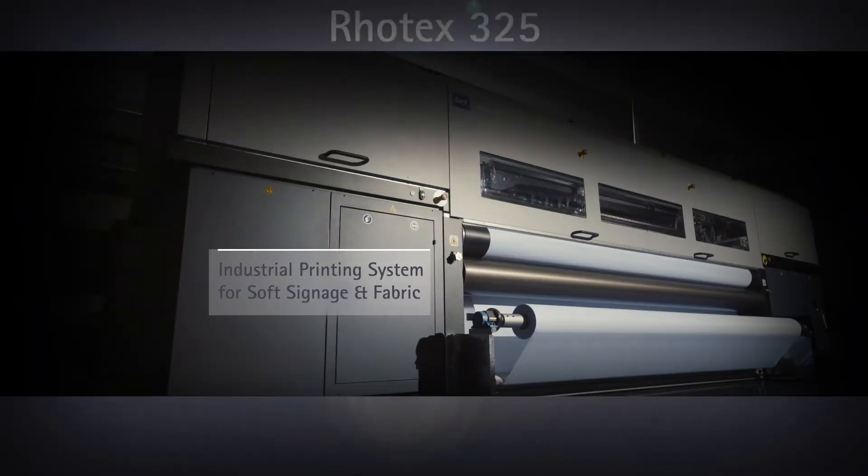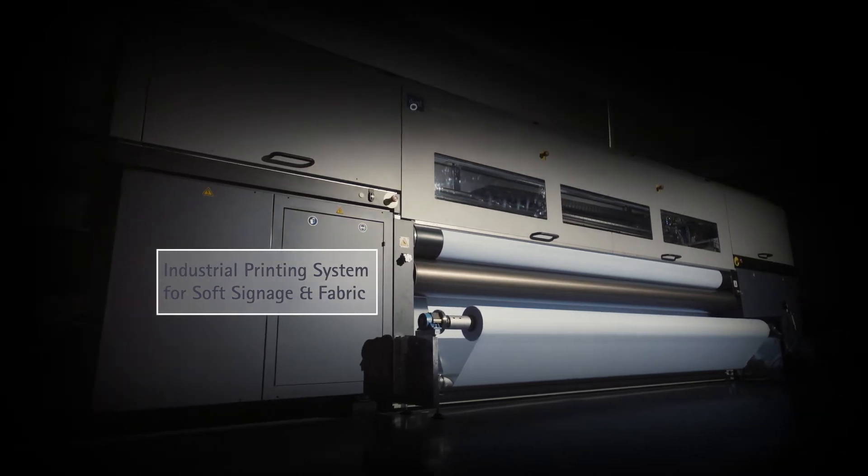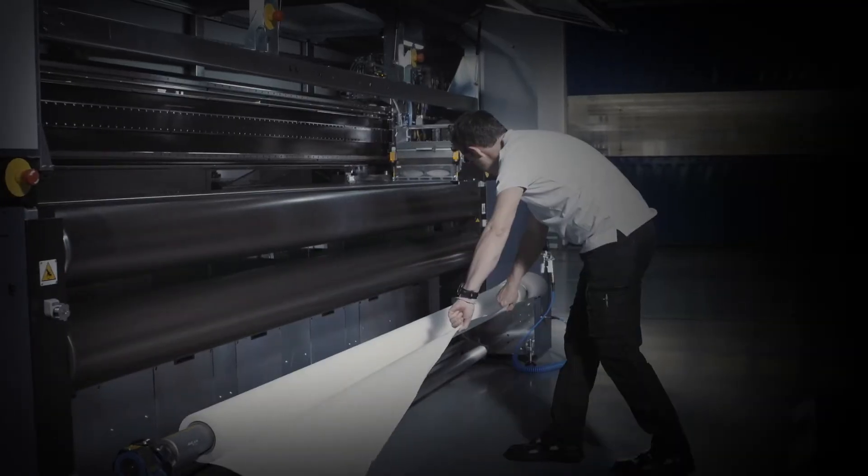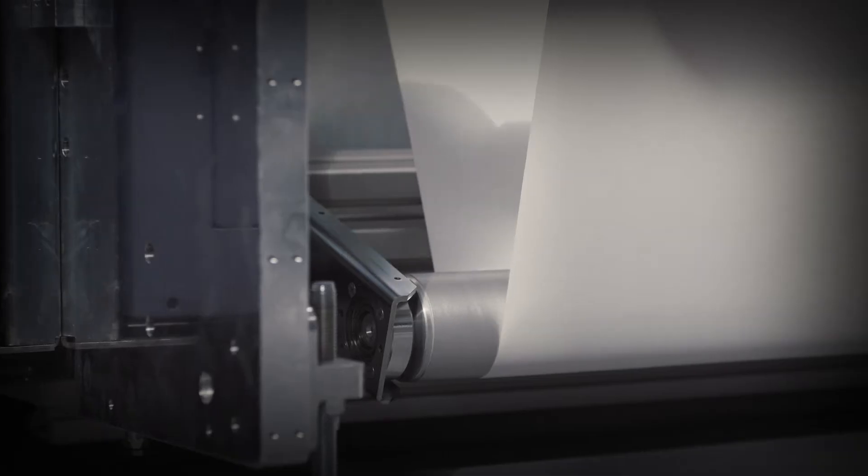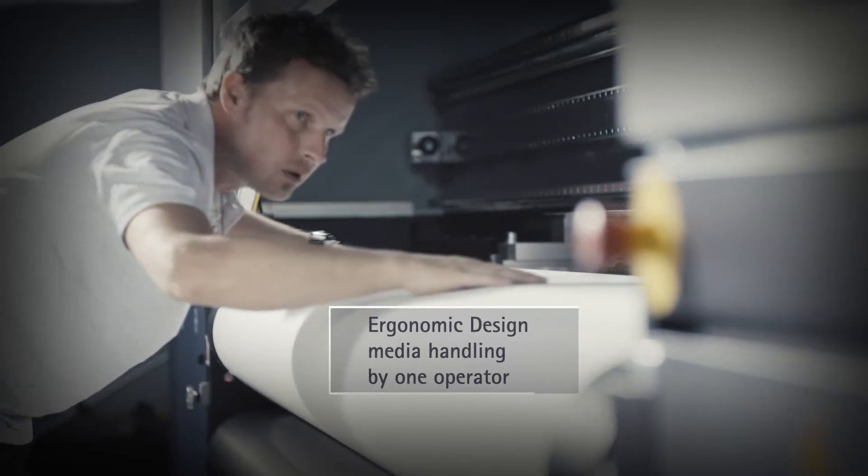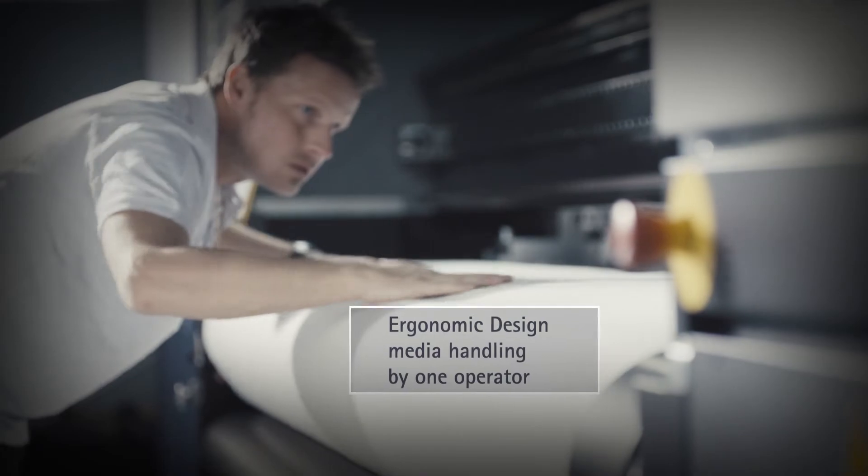Durst presents Rotex 325, the 3.2 meter wide industrial printing system for soft signage and fabrics. Easy and quick to load, this eco-friendly dual-purpose printing system can print on transfer paper and a wide range of coated and uncoated polyester fabrics and blends.